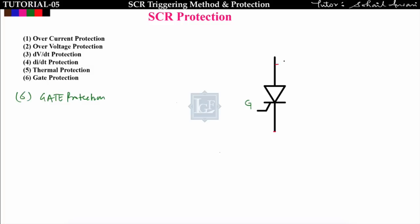The last protection is gate protection. We need to protect the gate from overcurrent IG as well as from excessive gate-to-cathode voltage. A Zener diode is connected in parallel across the gate-cathode to maintain a constant gate-to-cathode voltage. A resistor RG is inserted to limit the gate current and prevent damage to the gate terminal.